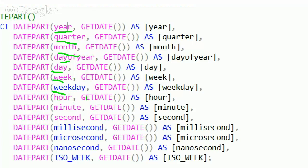The return value from all these is an integer. You'll get the hour, minute, second, millisecond, microsecond, nanosecond, and ISO week.